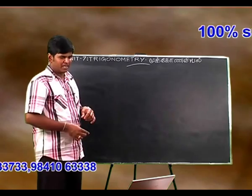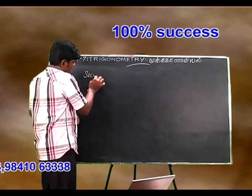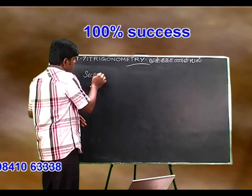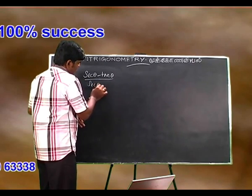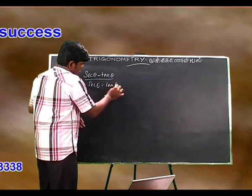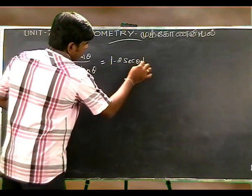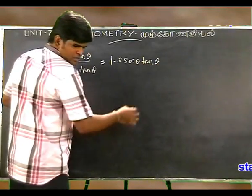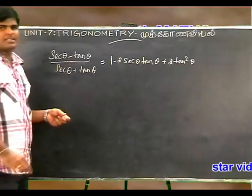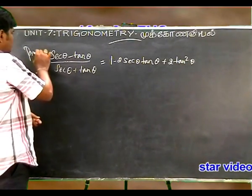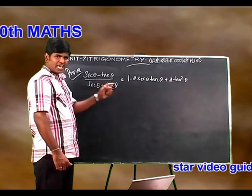Example number 7.9: Prove that secant theta minus tan theta, divided by secant theta plus tan theta, equals 1 minus 2 secant theta tan theta plus 2 tan squared theta.